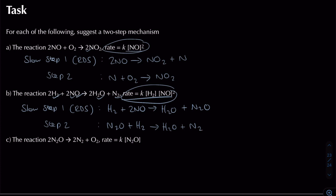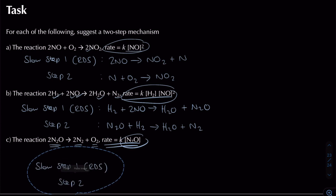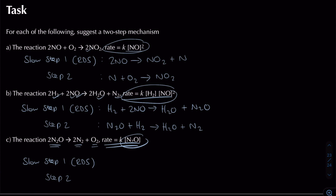Moving on: the rate equation has one lot of N₂O, and in the overall reaction two lots of N₂O react to form N₂ and O₂. In the rate determining step, one N₂O breaks down to form N₂ and an oxygen atom radical as the intermediate. That oxygen atom then reacts with another lot of N₂O in step two, forming N₂ and O₂. That gives us our two lots of nitrogen and oxygen products.